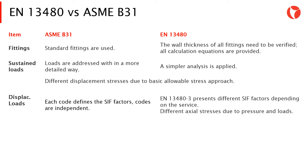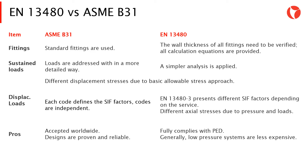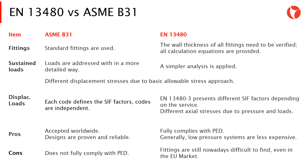In terms of advantages, the ASME B31 code is accepted worldwide and designs are proven reliable. On the other hand, the EN 13480 code fully complies with the Pressure Equipment Directive, and generally low pressure systems are less expensive. Regarding disadvantages, the ASME B31 code does not fully comply with the Pressure Equipment Directive, whereas for EN 13480, the fittings are still nowadays difficult to find, even in some European markets.